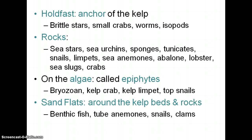You also get things that live on the algae itself — those are called epiphytes. Things like bryozoans, kelp crabs, the kelp limpet, and top snails will all actually live on the kelp itself. And if you have sand flats around the kelp beds and rocks, you'll get all sorts of fish as well as tube anemones, snails, and clams that will live there.